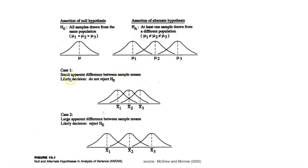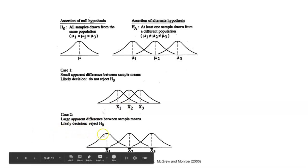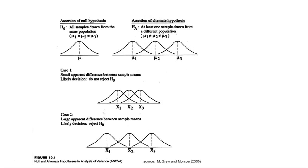Here are some outcomes. In a likely decision where we would not reject the null hypothesis, across three different samples, the differences look minor — we don't have evidence to reject the null, so there's really no difference between the means. In a second case where we see large differences across the sample means, we might reject the null hypothesis and conclude through our analysis that these population means are different.